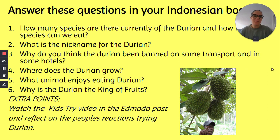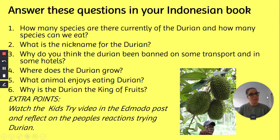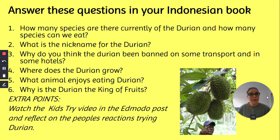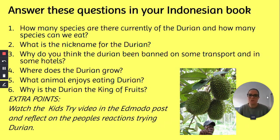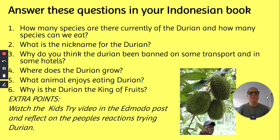Now we are going to be answering some questions in your Indonesian book about the information we just learned. Question one: how many species of durian are there currently, and how many species can we eat? Question two: what is the nickname for the durian? Question three: why do you think the durian has been banned on some transport and in some hotels? Question four: where does the durian grow? Question five: what animal enjoys eating durian? Question six: why is the durian the king of the fruits?